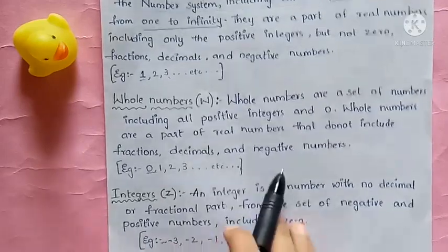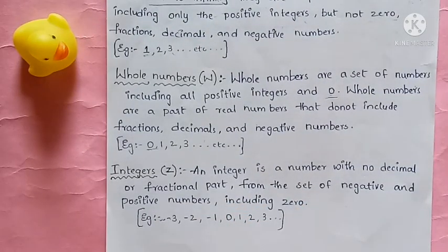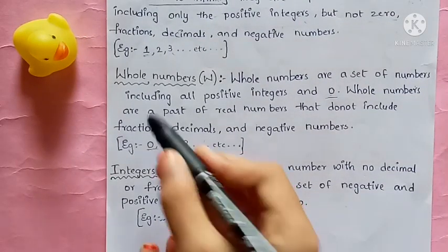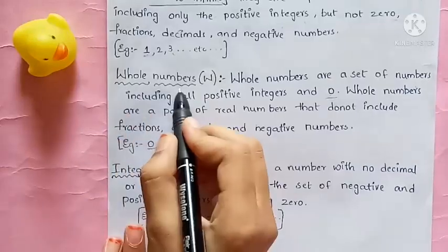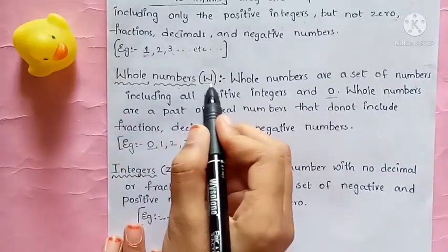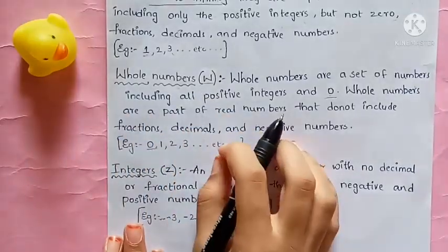Now coming to integers. What's the meaning of integers? Also, whole numbers are always denoted with W.